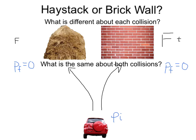If I go through the haystack, assuming there's a lot of hay there, that collision can last for a much longer time. Notice that both the haystack and the brick wall will bring my car to a stop, and a final momentum of zero, but they do it in different ways. The haystack will provide a smaller force on my car for a larger amount of time, whereas the brick wall provides a large amount of force for a very short amount of time. Looks like I'll choose the haystack.